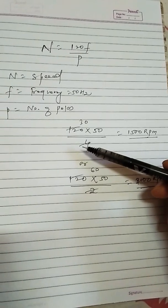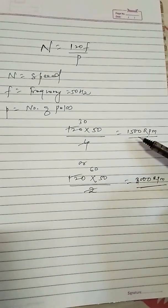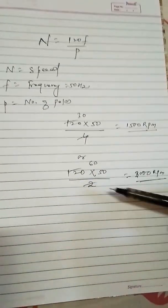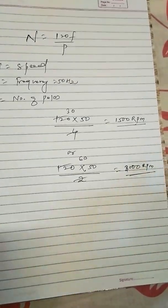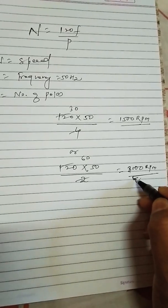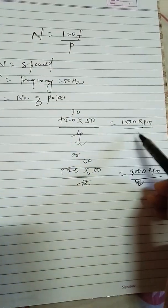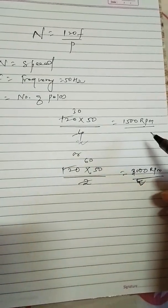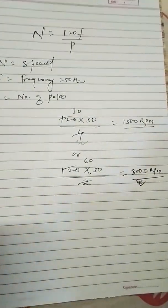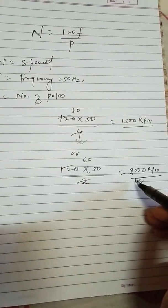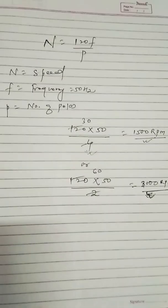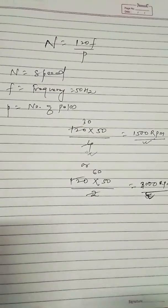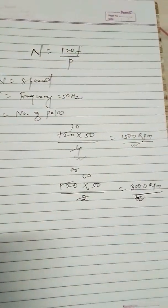If we have a four-pole generator, the turbine should rotate at 1500 RPM. If the number of poles is 2, then the turbine speed will be 3000 RPM. In some cases, if the turbine RPM is 3000 and we have a four-pole generator, we use a gearbox between the turbine and generator to reduce speed from 3000 to 1500 RPM. In that way, we calculate the number of poles or speed requirement.